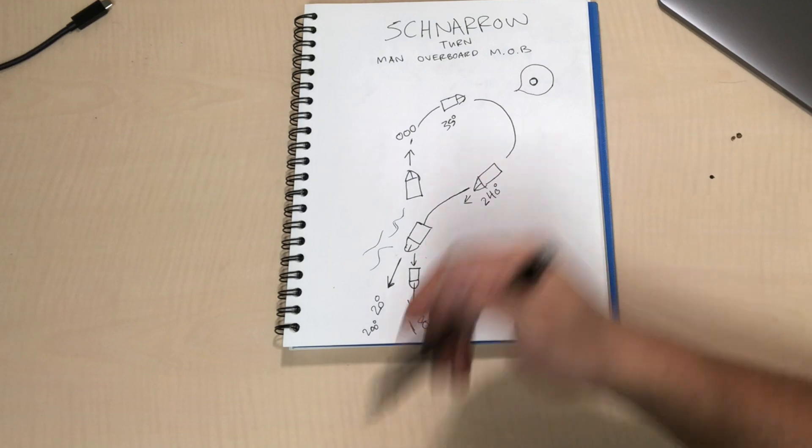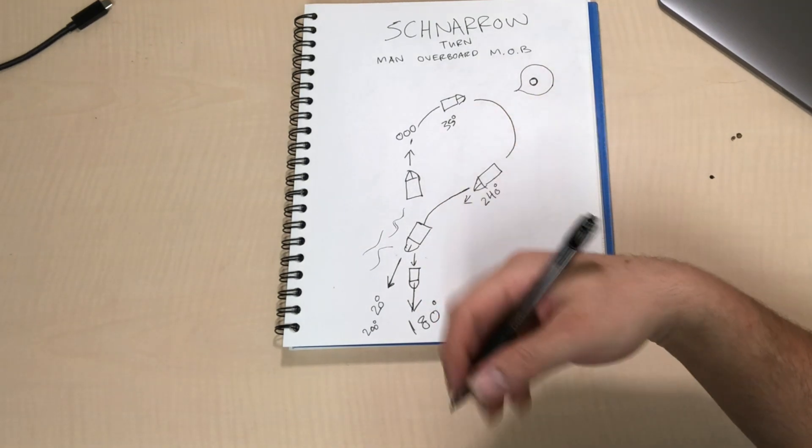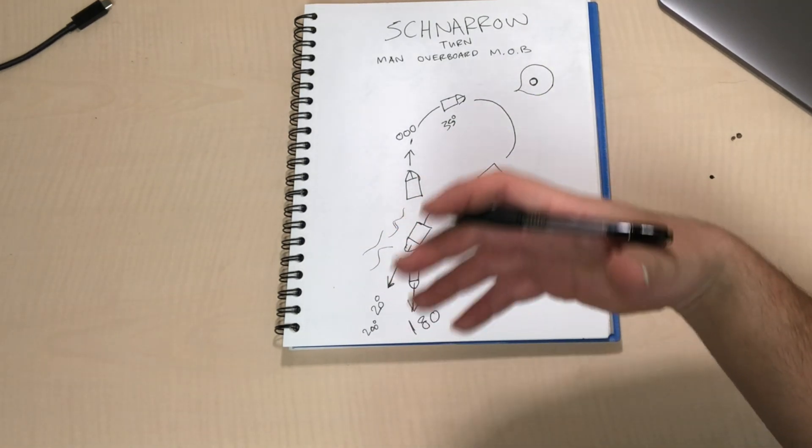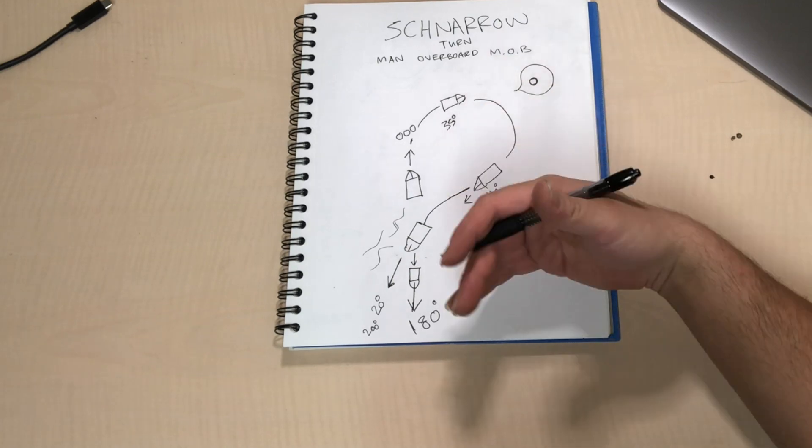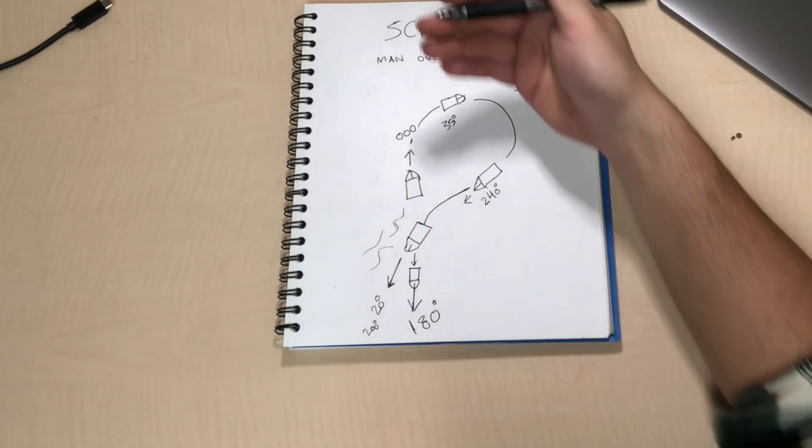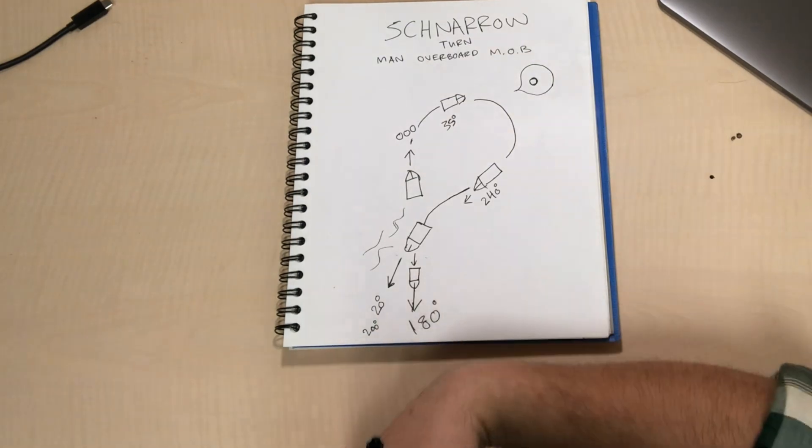So the Scharnow turn if you know he went over and some time has elapsed, but the Williamson turn, I believe, if you have no idea when the person went over, then you would want to do a Williamson turn to get back on your exact course and just come back.